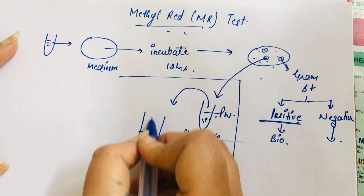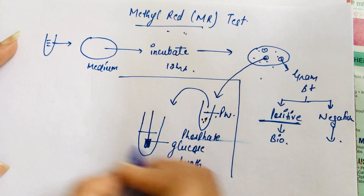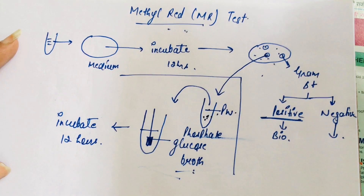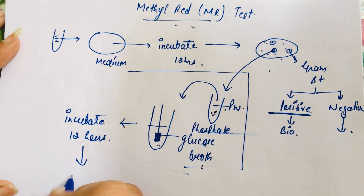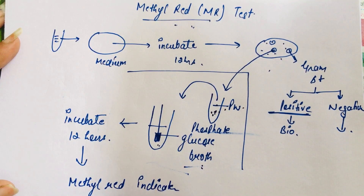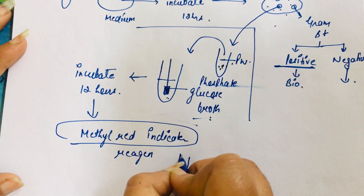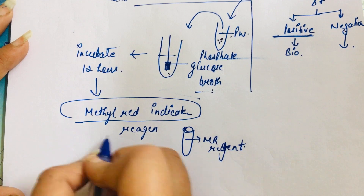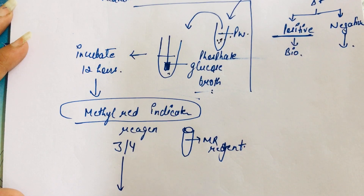We dip the straight wire into the peptone water and then transfer it into the phosphate glucose broth, and incubate it again for 12 hours or overnight. On the next day, after incubation, we add methyl red indicator — the MR reagent — which is commercially available. We add 3 to 4 drops of this MR reagent into the phosphate glucose broth.